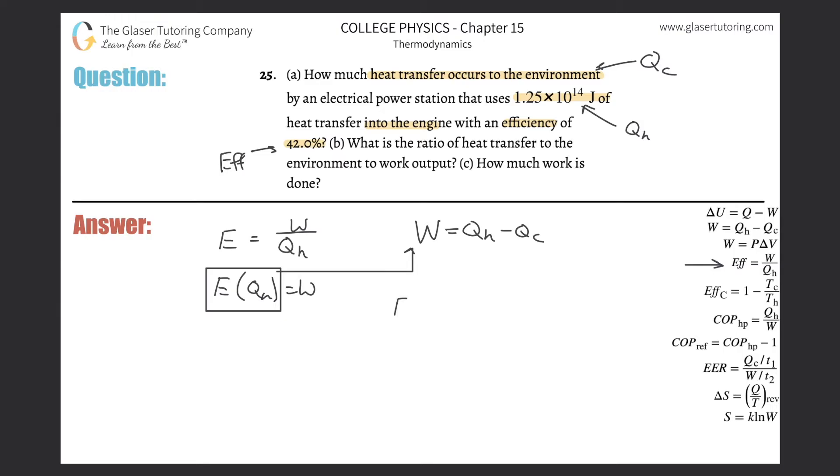I realize now we have efficiency multiplied by Q sub h will equal Q sub h minus Q sub c. I got to solve this for Q sub c. I'm going to bring that over to the left, add it, and subtract this over to the right. That should be equal to Q sub h minus e times Q sub h. Now we can calculate: Q sub c equals 1.25 times 10 to the 14th minus 0.42 multiplied by 1.25 times 10 to the 14th.